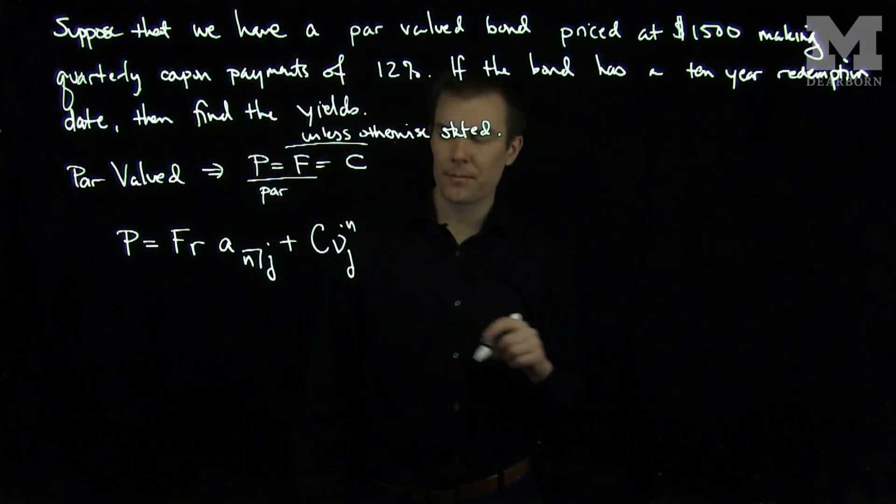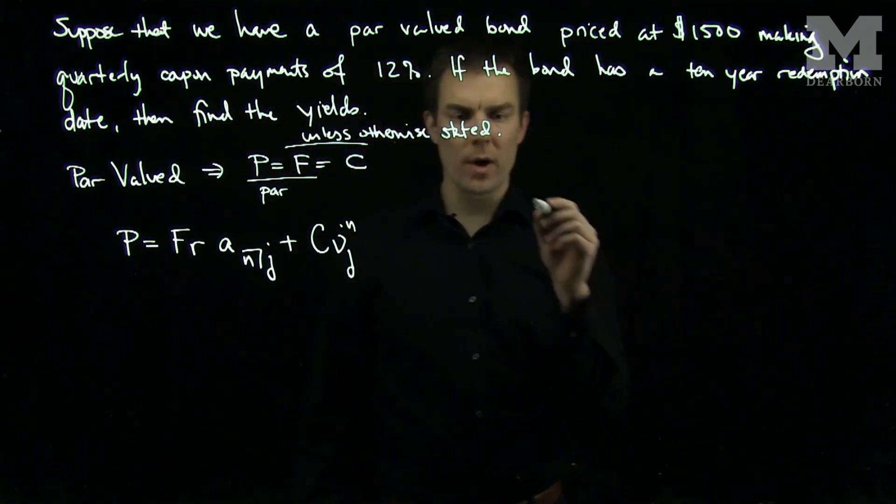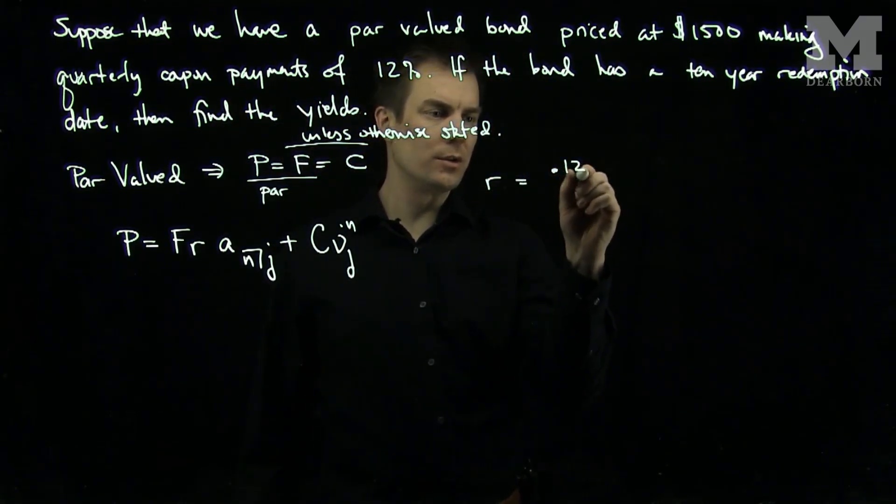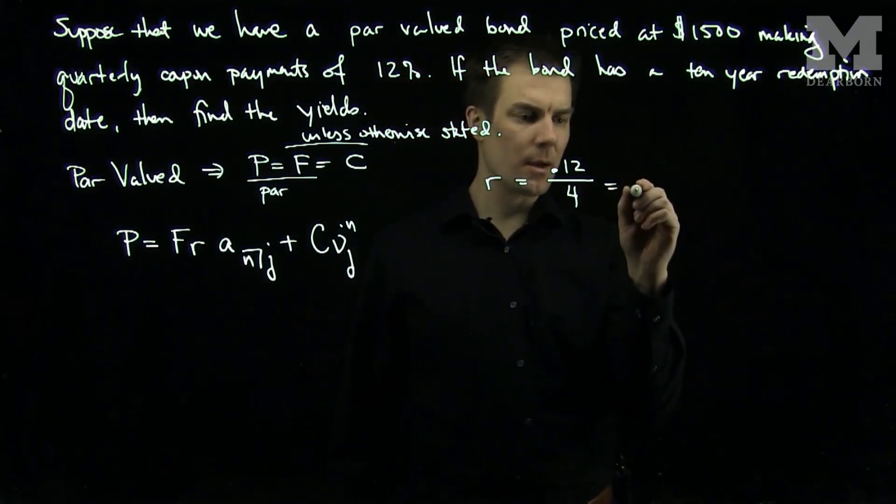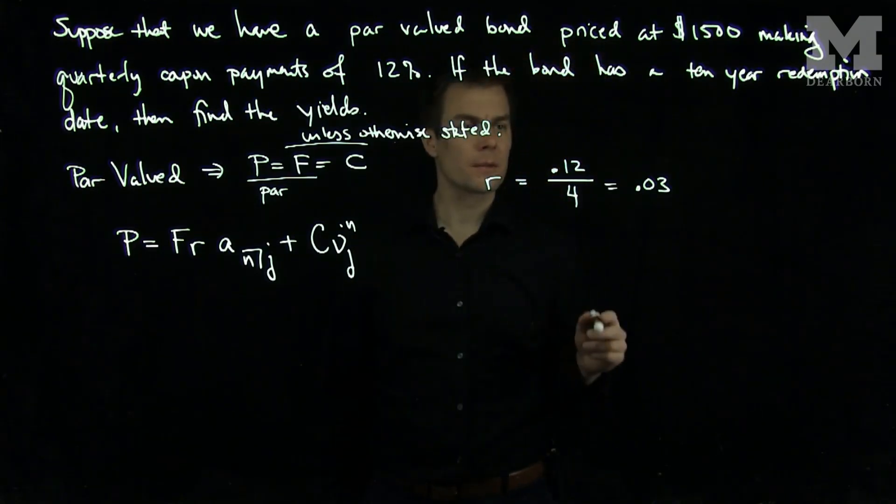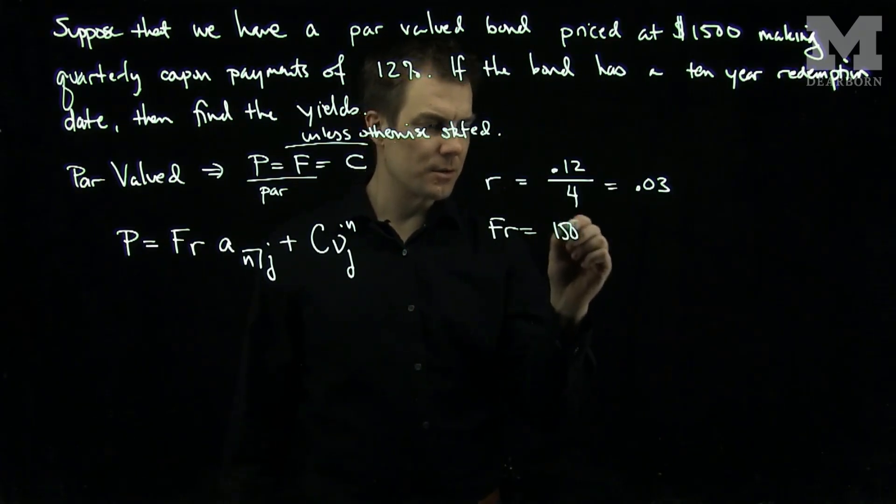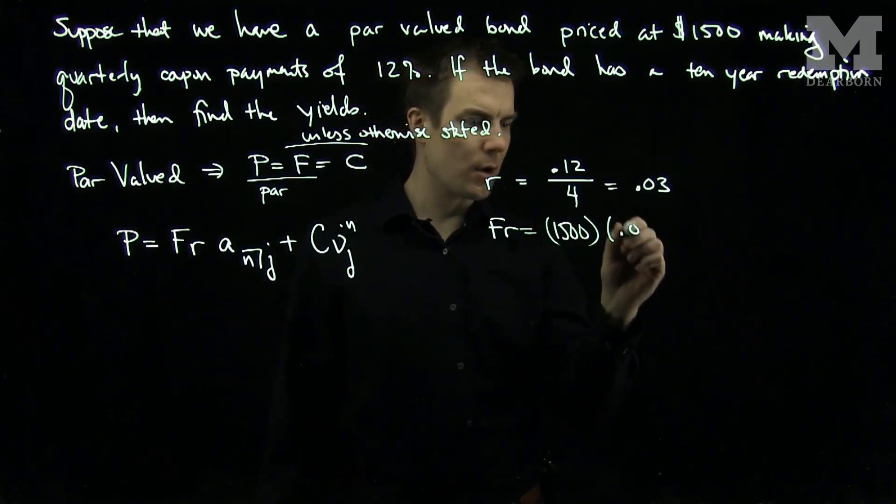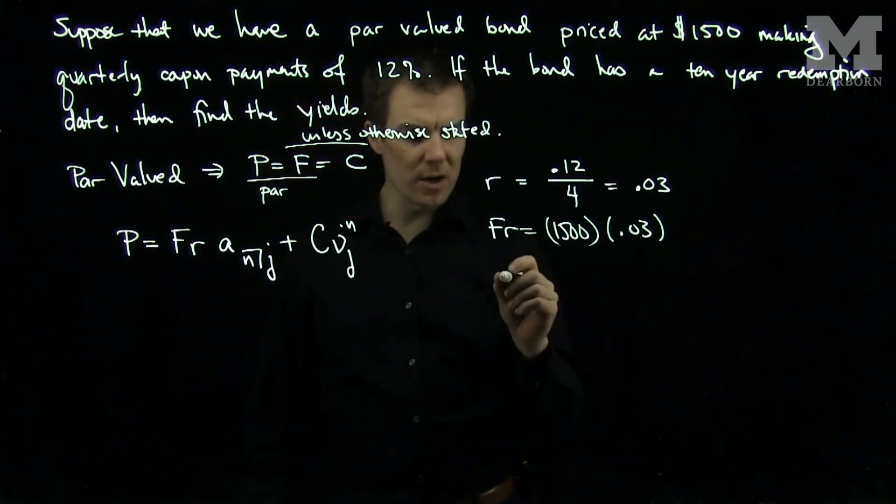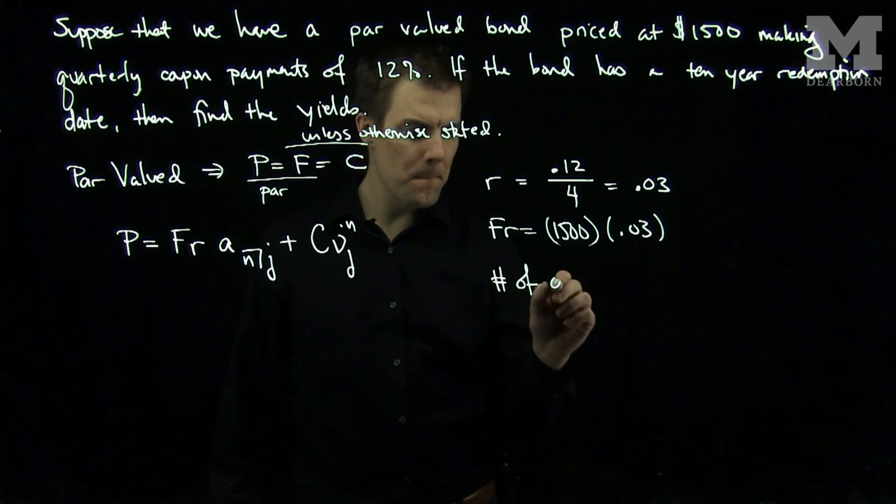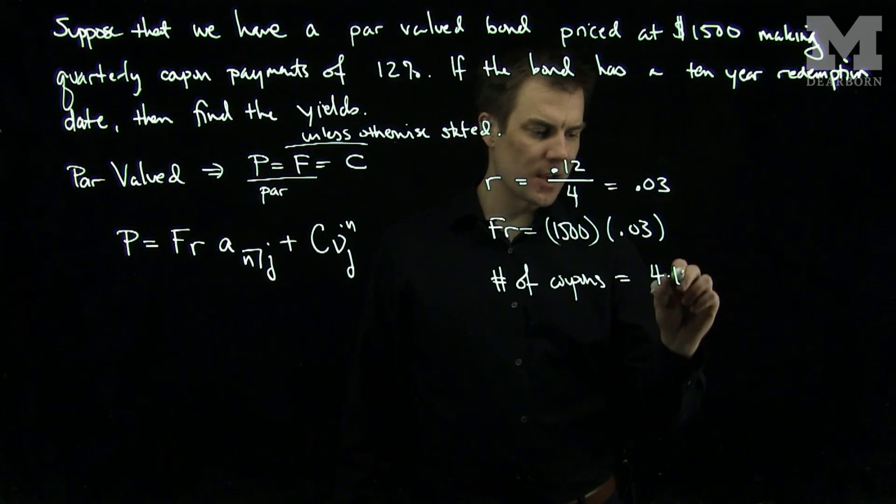For us, we know that the nominal rate is 12, so our R will be 0.12 over 4 for the quarters. So we will have a 0.03 value for R, and therefore we have that F times R is 1500 times 0.03. And we know it's a 10 year bond, so our number of coupons is going to be 4 times 10, which is 40.